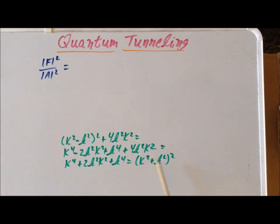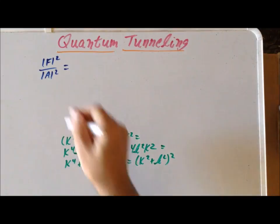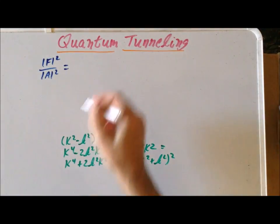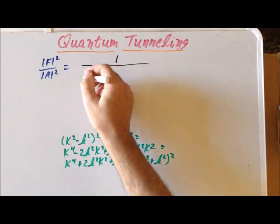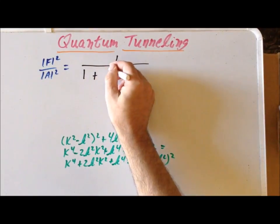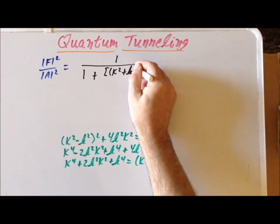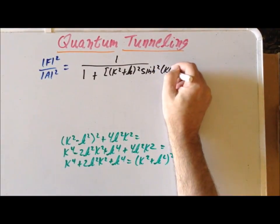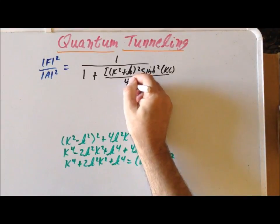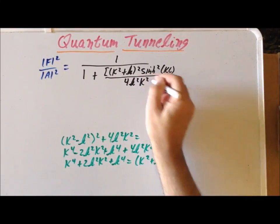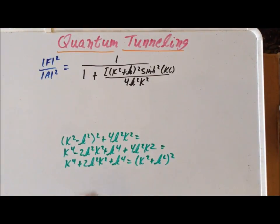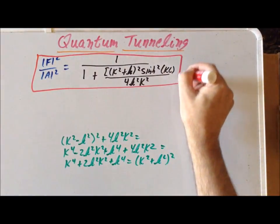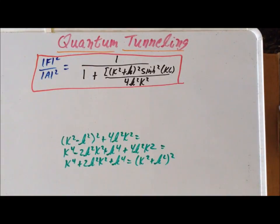Now, using this substitution, we're able to write our final version for the ratio of the transmitted electrons to those that entered the barrier. The transmission probability is 1 divided by 1 plus K squared plus small k squared squared times the hyperbolic sine squared of KL, divided by 4 small k squared big K squared. So that is our big result. Thank you very much for your attention. Have a good one.